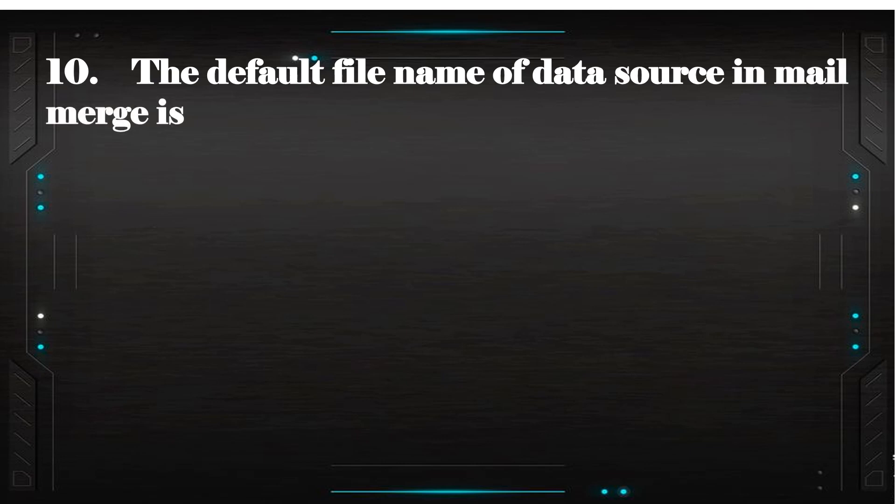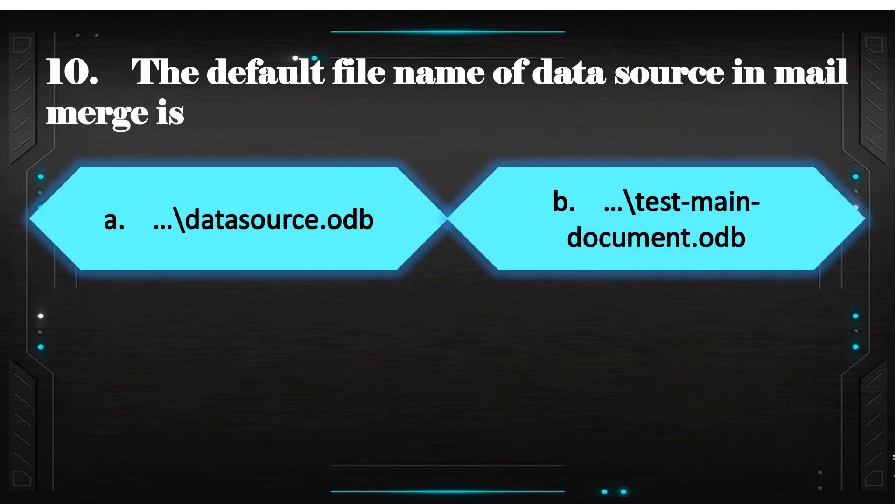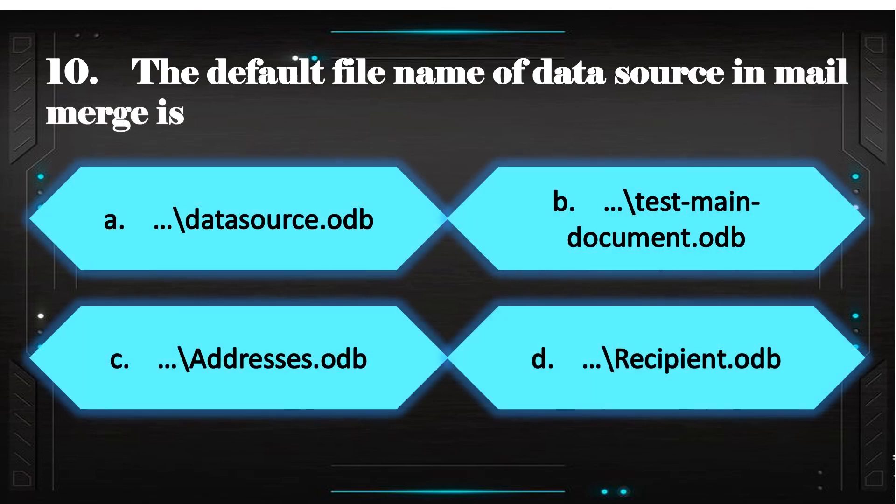The default file name of data source in MailMerge is? Answer: C. Addresses.ode.